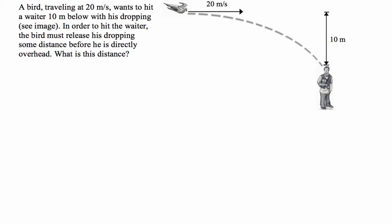Okay, so there are two factors that are going to govern the distance that the bird is going to have to be away from the waiter. First is the speed that the bird is going. The faster that the bird is going in the horizontal direction, the further away he's going to have to be. And the time it takes for the poo to fall through these 10 metres.